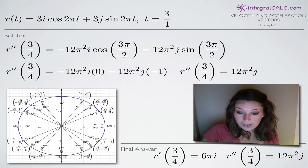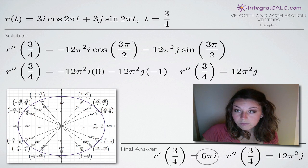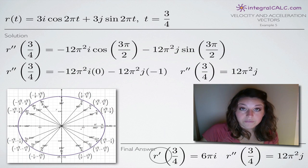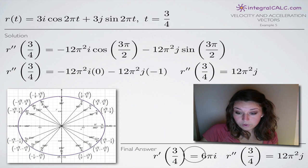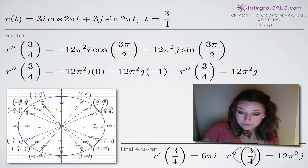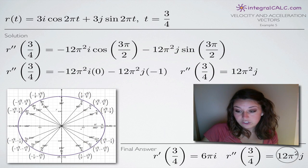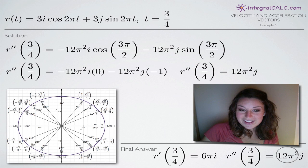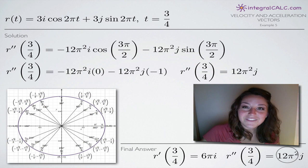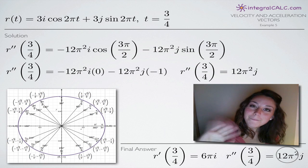Putting those two together: our velocity vector, the first derivative r prime evaluated at t equals 3 fourths, is 6 pi i. The acceleration vector, the second derivative evaluated at t equals 3 fourths, is 12 pi squared j. I hope that helped and I'll see you in the next video!